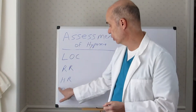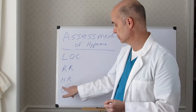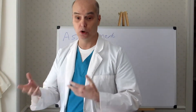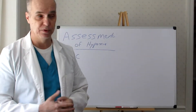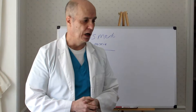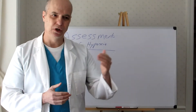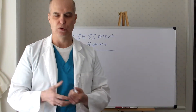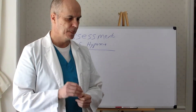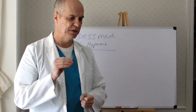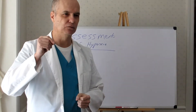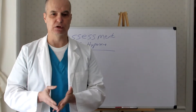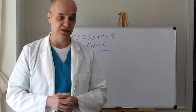And then of course we have O2 saturation. Normal is considered to be 98 to 100%. As you get older, we can accept 92, 94, or 95%. But let's talk about what you're actually reading with an O2 saturation by pulse oximeter.